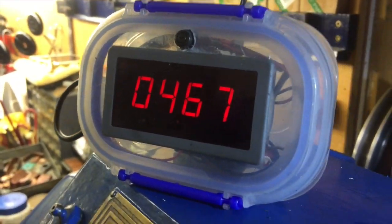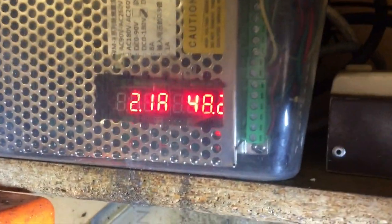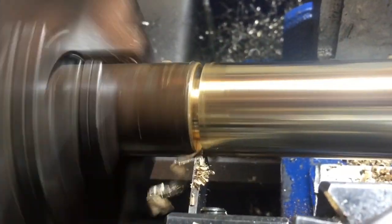Just doing 467 RPM and drawing 2.1 amps at 48 volts showing on the pulse width modulator.